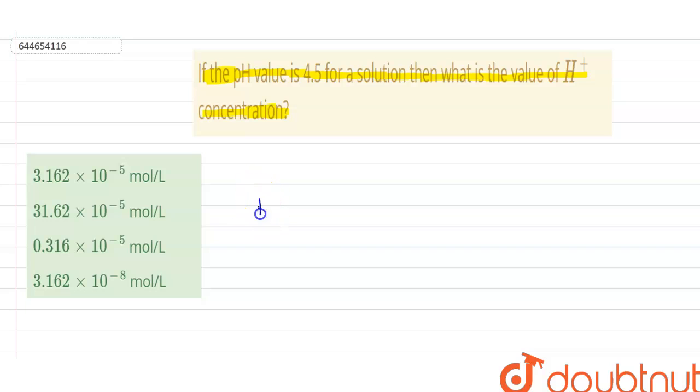first of all, we have to know what is the pH. pH is defined as minus log of H+ ion concentration. Here it has been given the value of pH as 4.5, which will be equal to minus log